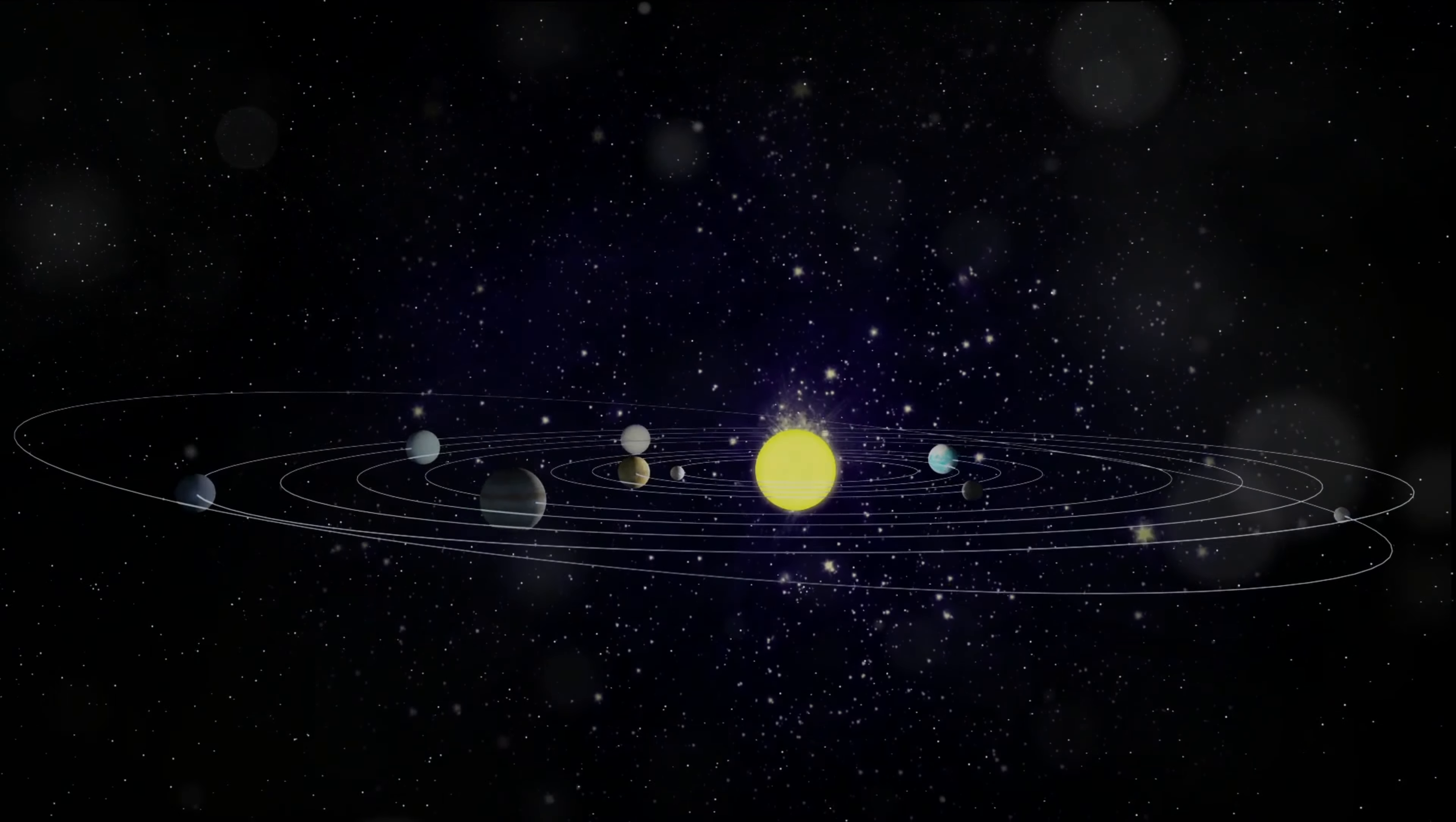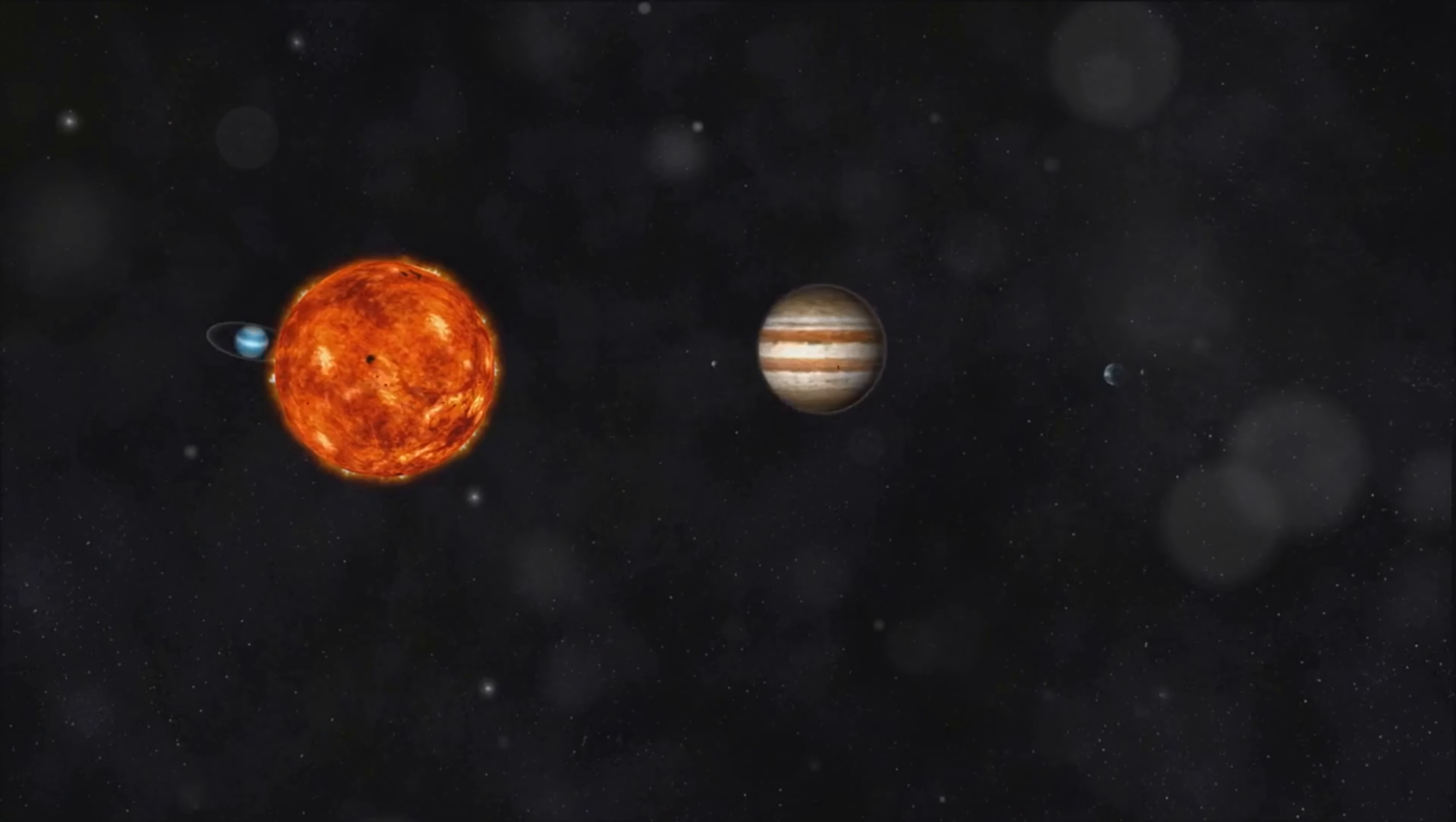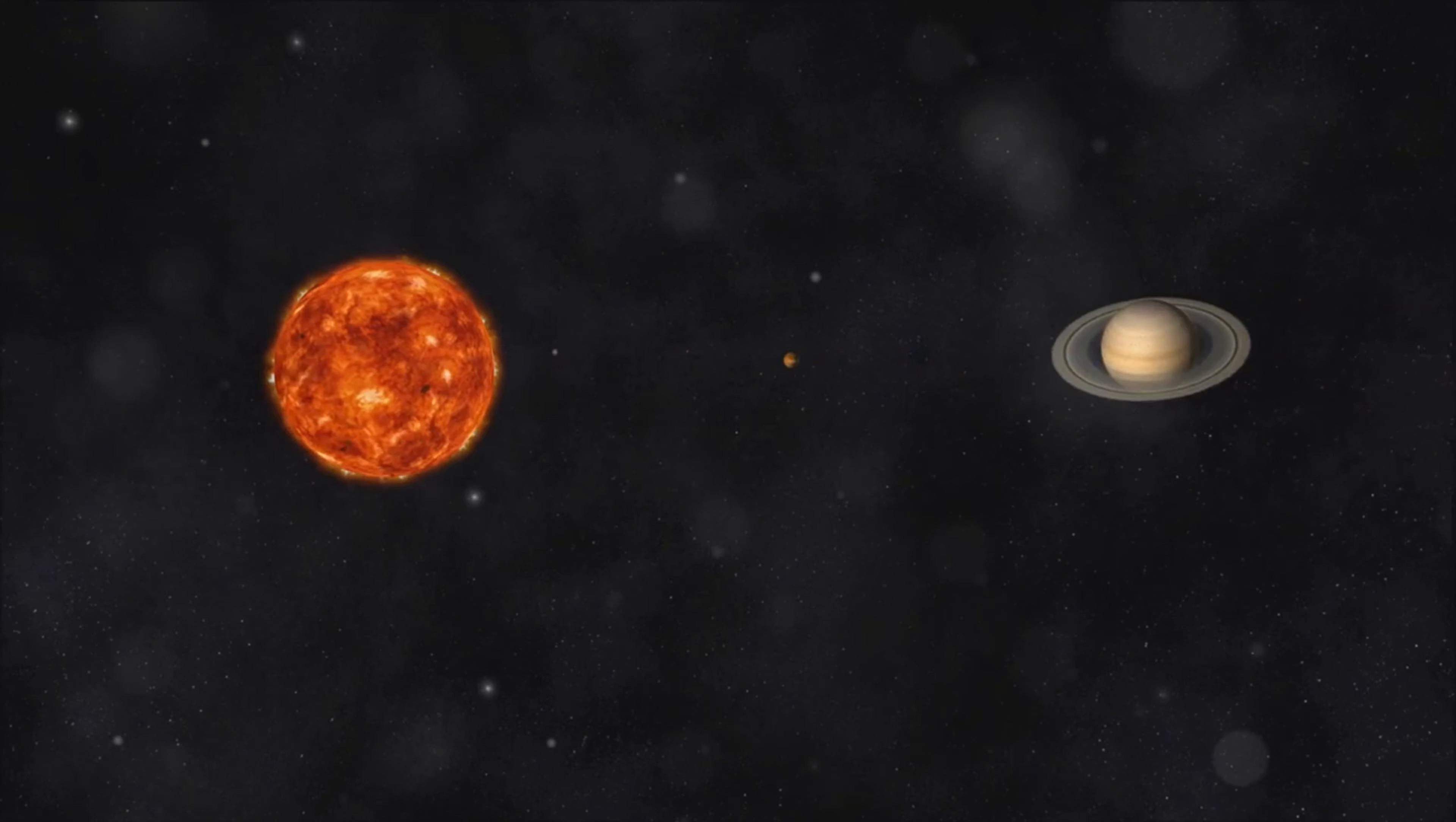Implications of discovering a ninth planet. The potential discovery of a ninth planet would have profound implications for science and society. It would not only reshape our maps of the solar system, but also deepen our understanding of its history and dynamics. For planetary science, it would validate a new model of solar system evolution, possibly revealing mechanisms of planetary migration and the early influences that shaped the outer solar system.